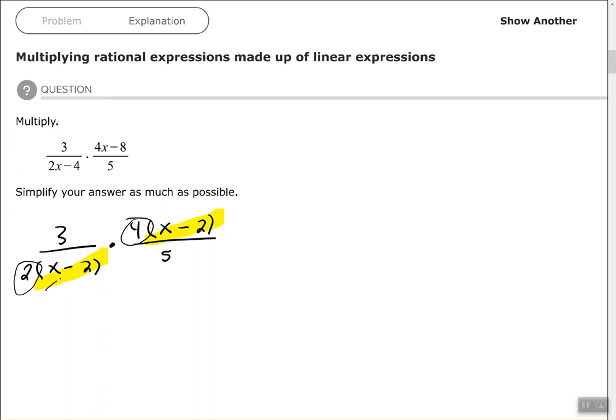The x minus 2 is cancelled completely out, but the 2 and the 4, I know that 2 will go in the 2 one time and 2 will go in the 4 two times. So that leaves me with in my numerator 3 times 2 and my denominator 1 times 5, which leaves me with 6 over 5.